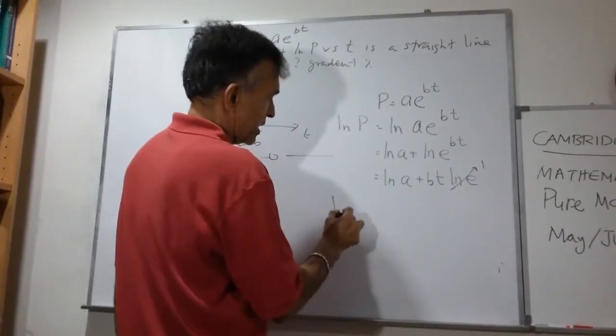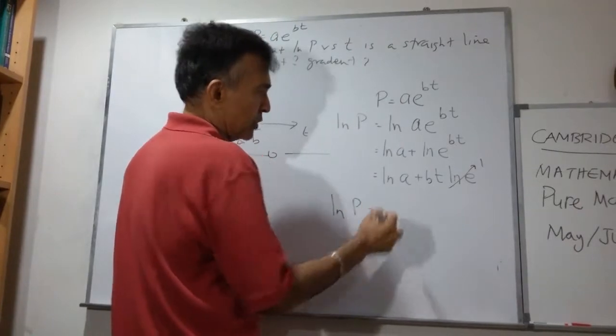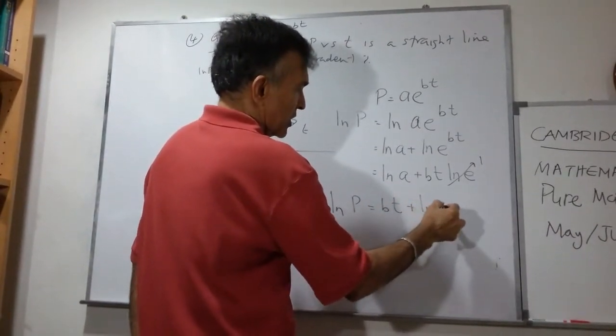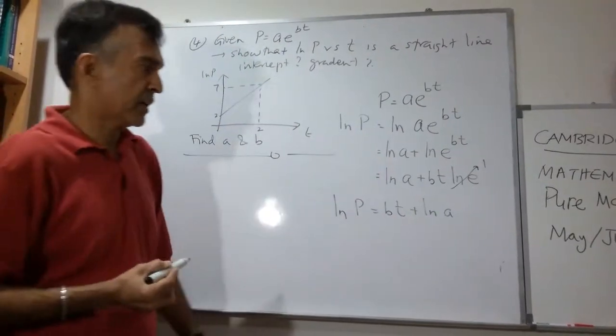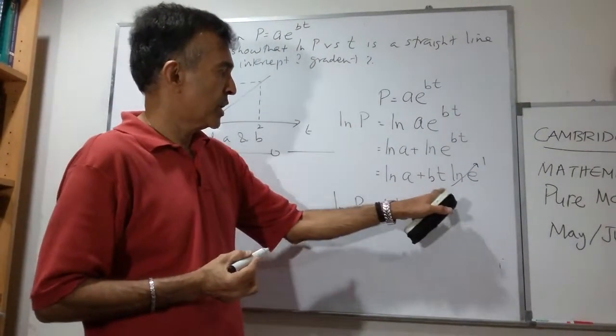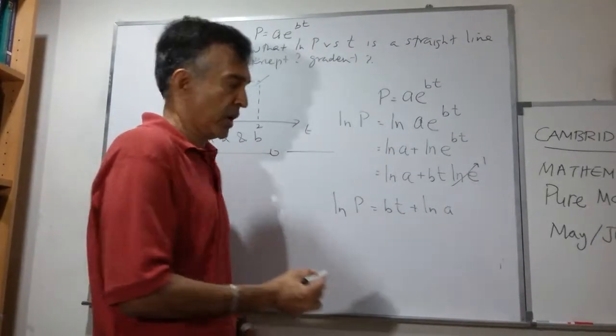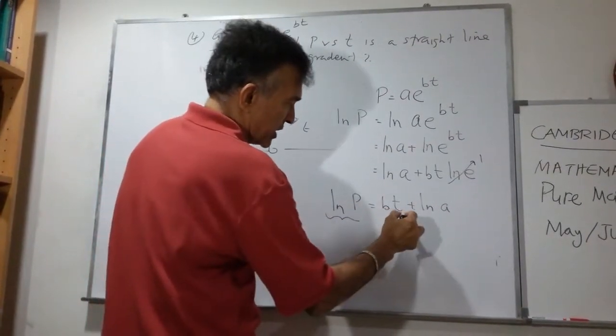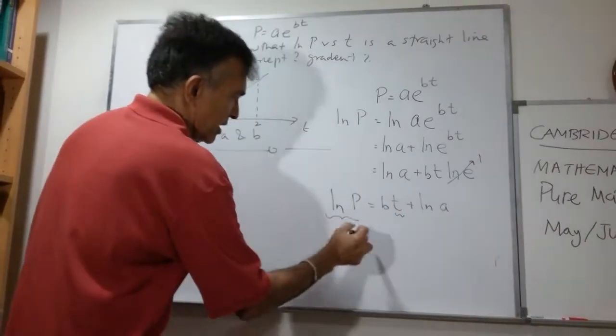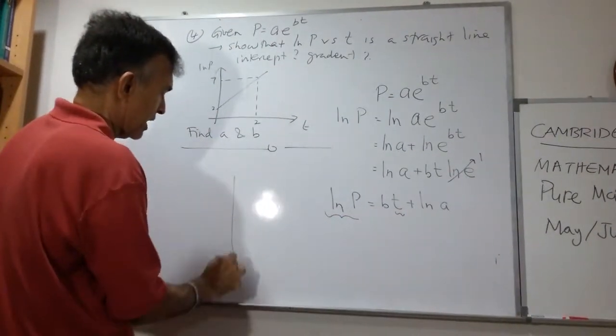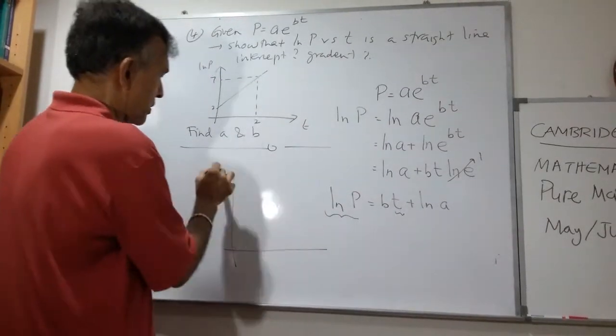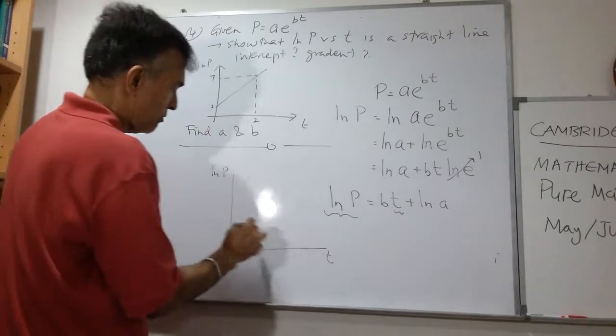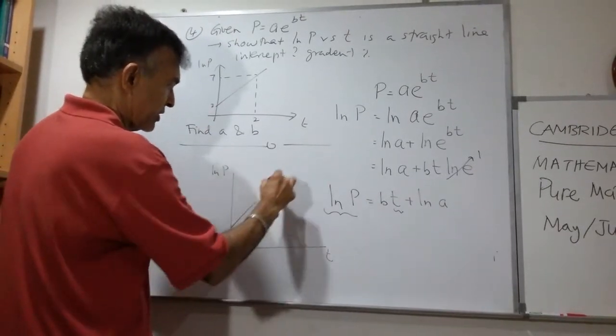Therefore, we can write ln P as equals to BT plus log A. So we can write this as log P equals to BT plus log A. So if we plot log P against T, let me draw that here. I'm going to erase this. If we plot log P against T, you will get a straight line.